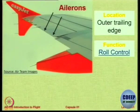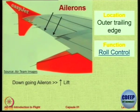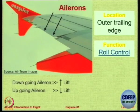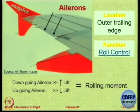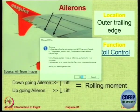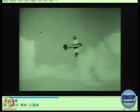The aileron is not found in every aircraft, only some. Its location is on the outer trailing edge of the wing. Its function is roll control — the aileron that goes down gives more lift; the one that goes up gives less lift, producing a rolling moment. Let us see a small clip of the aileron in action and the effect of deflecting ailerons.